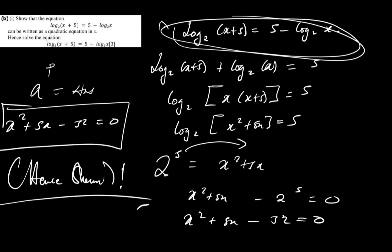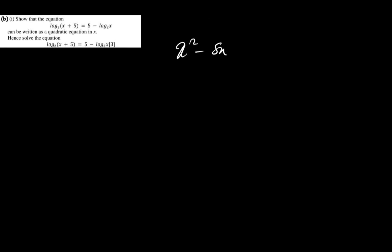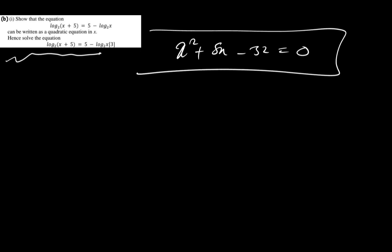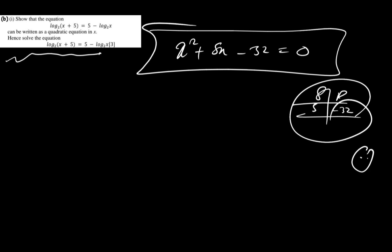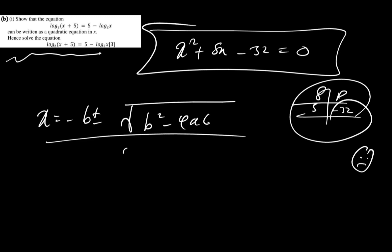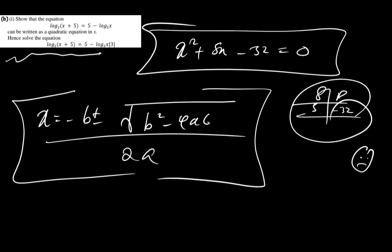Since 2 to the power 5 equals 32, we have x squared plus 5x minus 32 equals zero. Sum and product will not work here — there are no integer factor pairs. So we use the quadratic formula: x equals negative b plus or minus the square root of b squared minus 4ac, all over 2a. That concludes the first part on exponentials and logs.